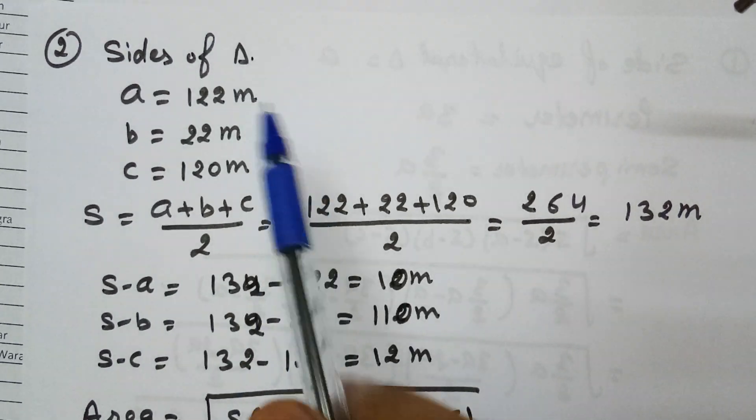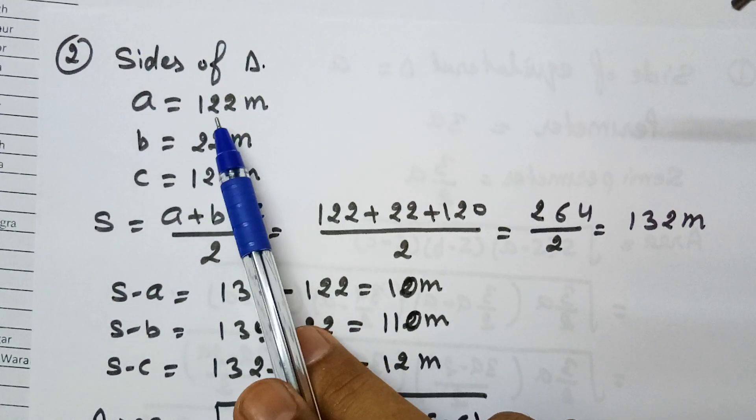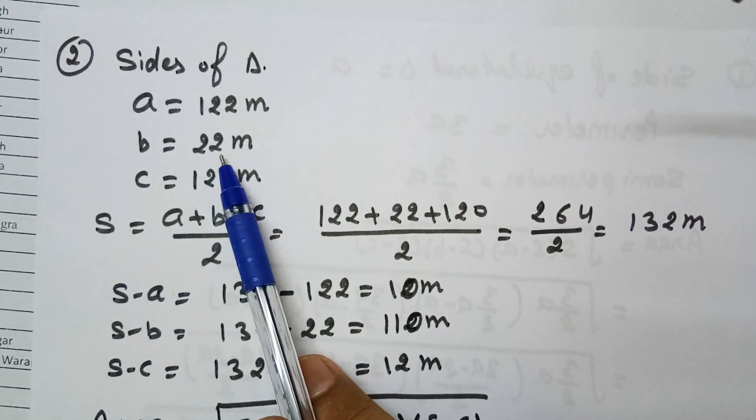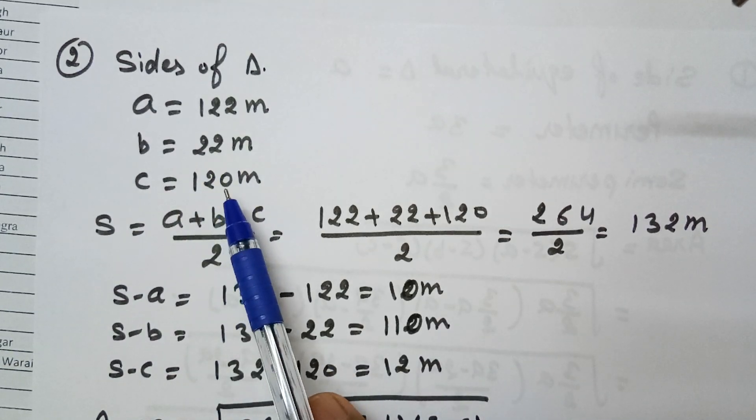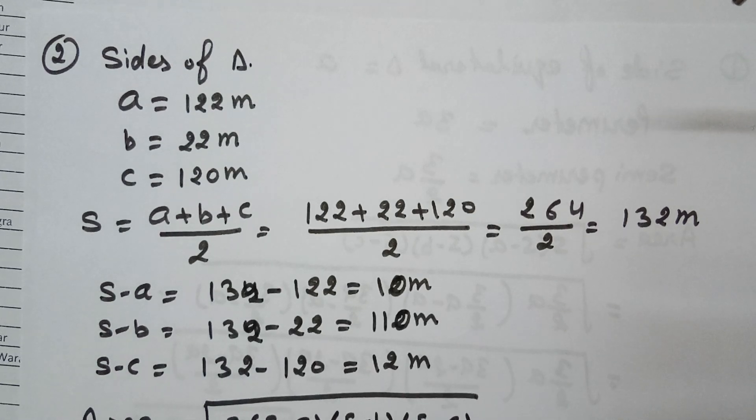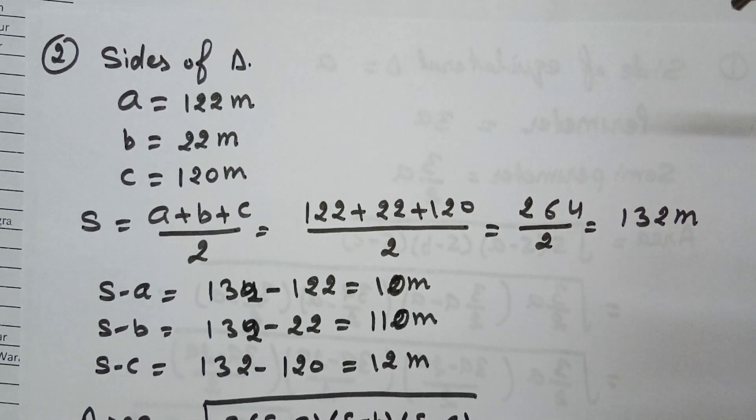In this question, we have a triangle with sides a = 122 meters, b = 22 meters, and c = 120 meters. We need to find the area of this triangle using Heron's formula.